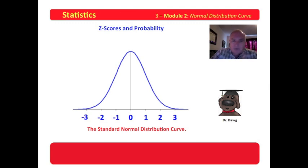The normal distribution curve we call the bell curve. And we know this is the standard normal distribution curve because the mean is zero and the standard deviation is one.